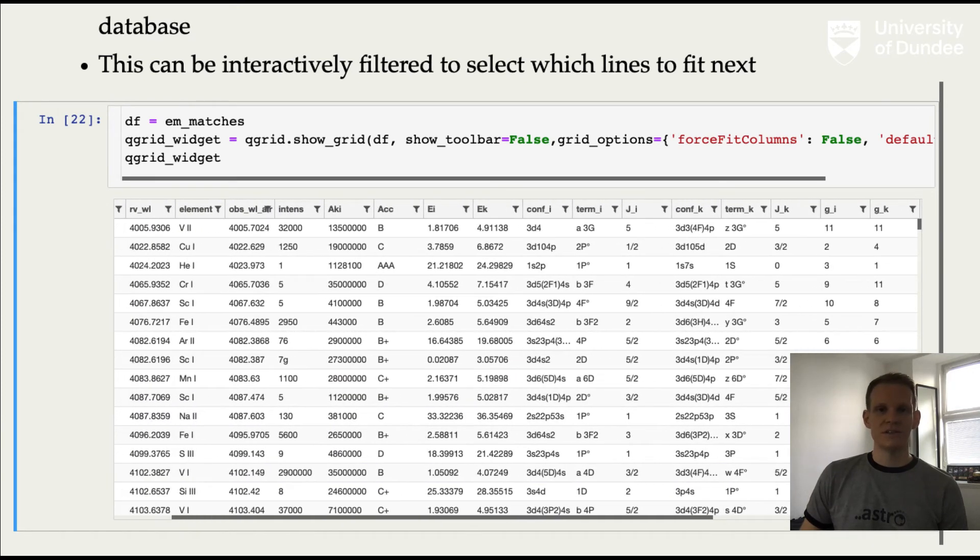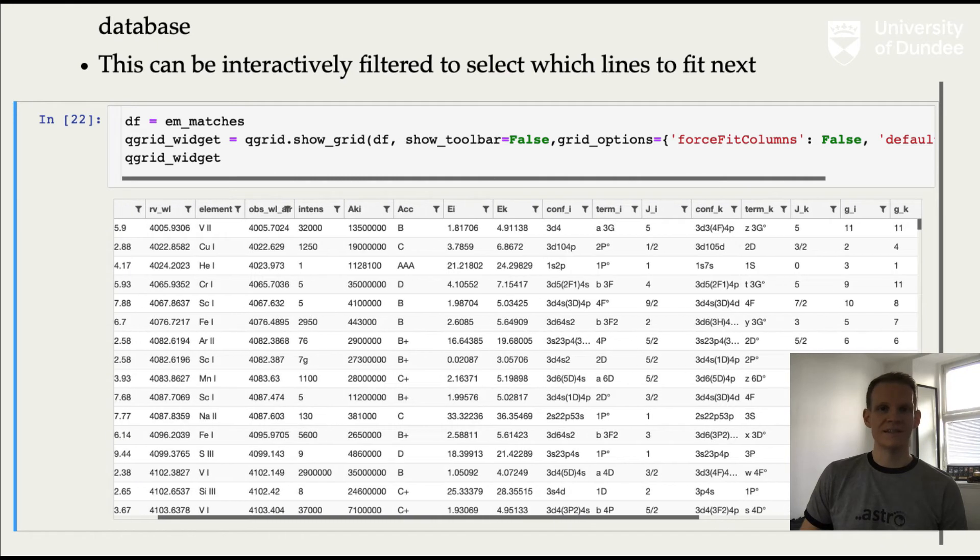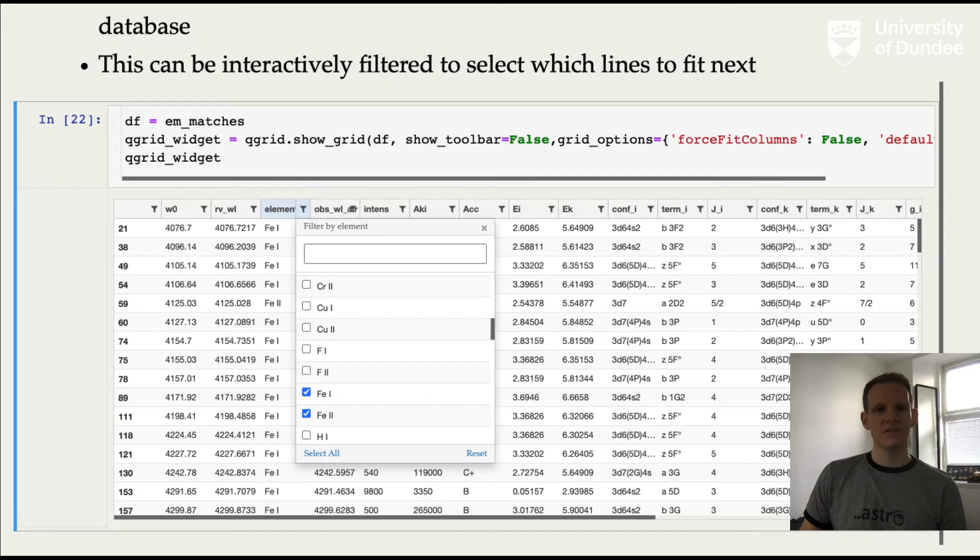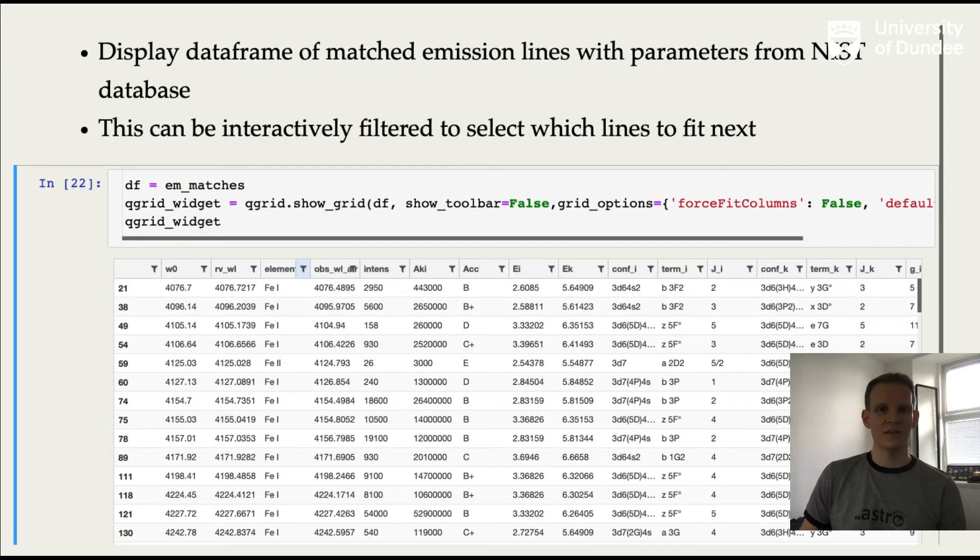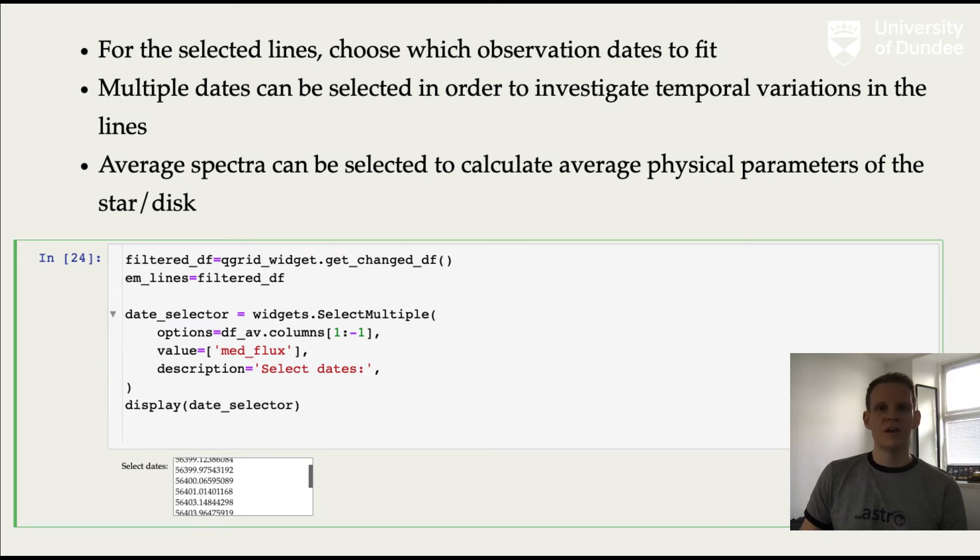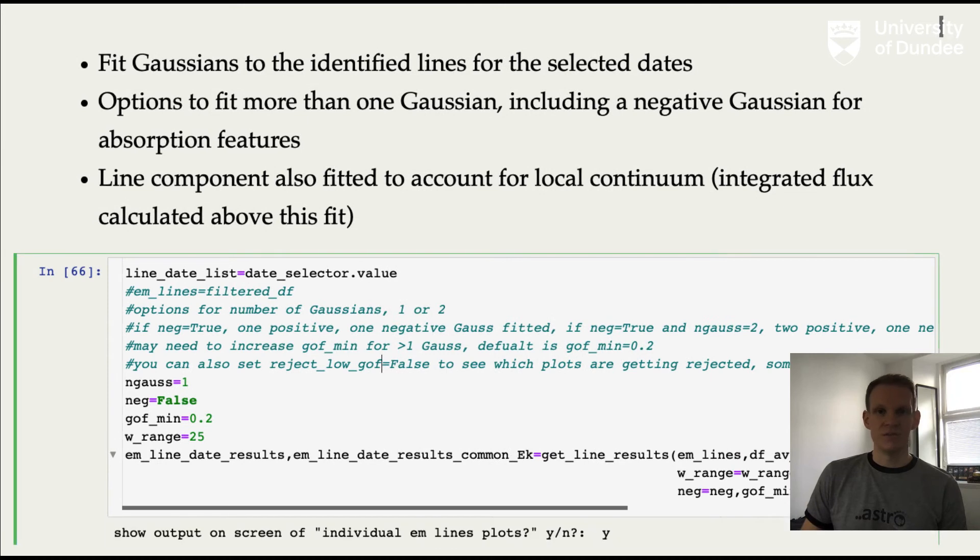We can use this interactive QGrid to filter the data frame by the elements that we're interested in fitting. So in this case, we'll pick the Fe I and Fe II lines. And next you have the option to decide which observations you'd like to fit. So you can select multiple dates here, if you want to fit more than one and then compare the velocity modulations of the line or fit periodograms. And this would be useful for, for example, investigating the contribution from forming planets on the line, both in emission and absorption. You can also select one of the average fits to investigate the average properties of the lines across all of the observations. So that's what we'll do here.